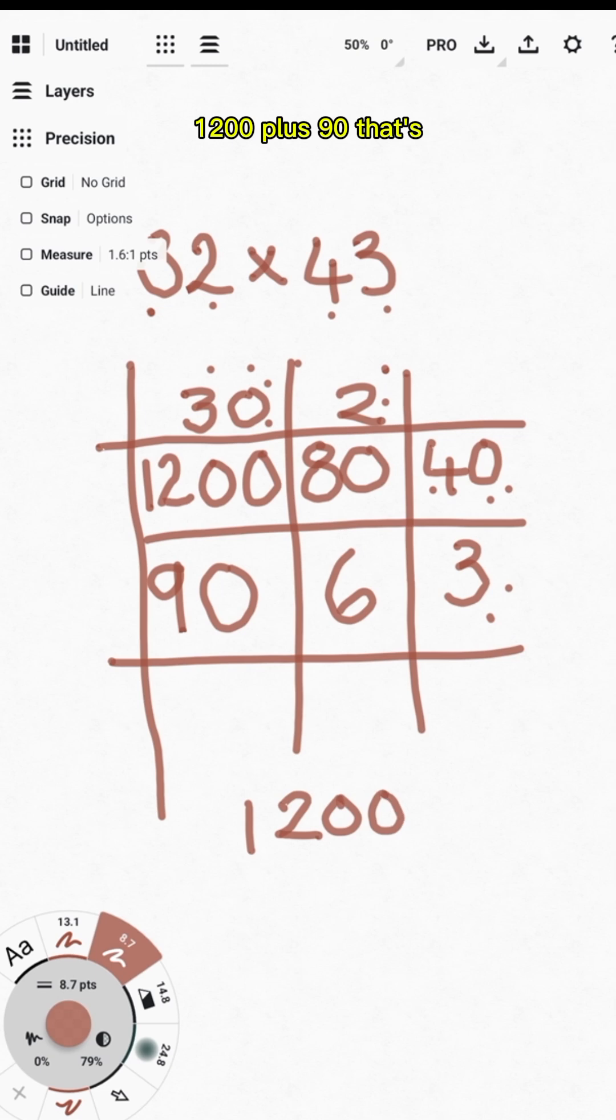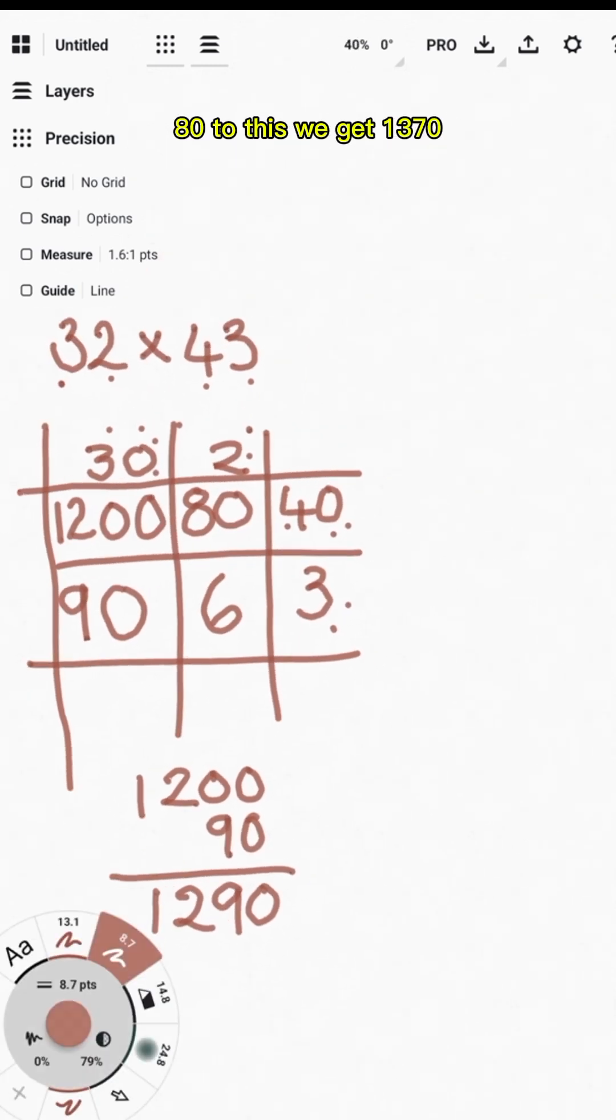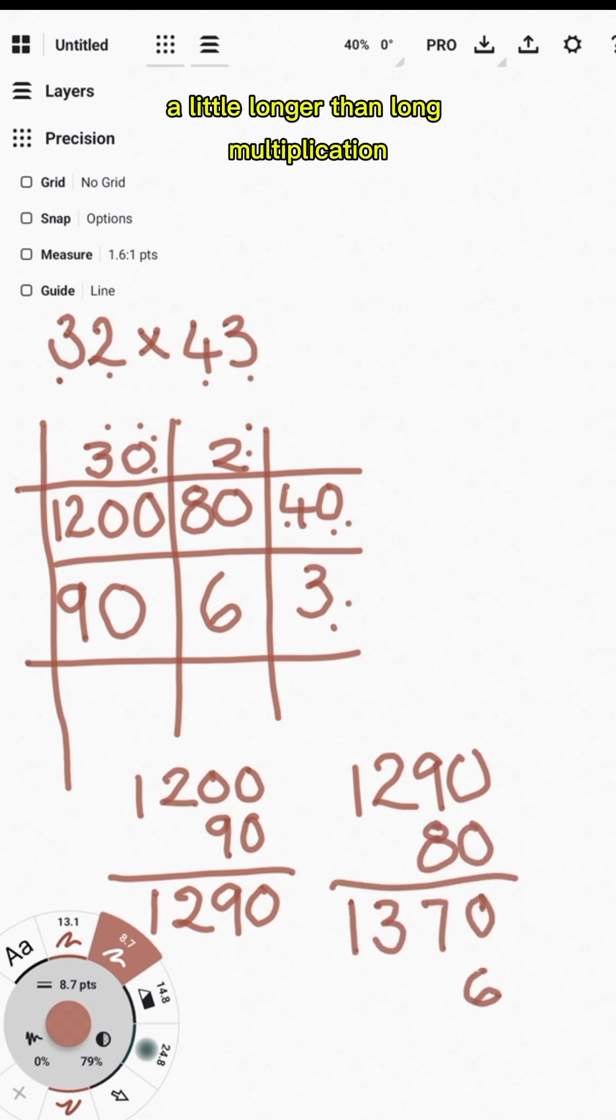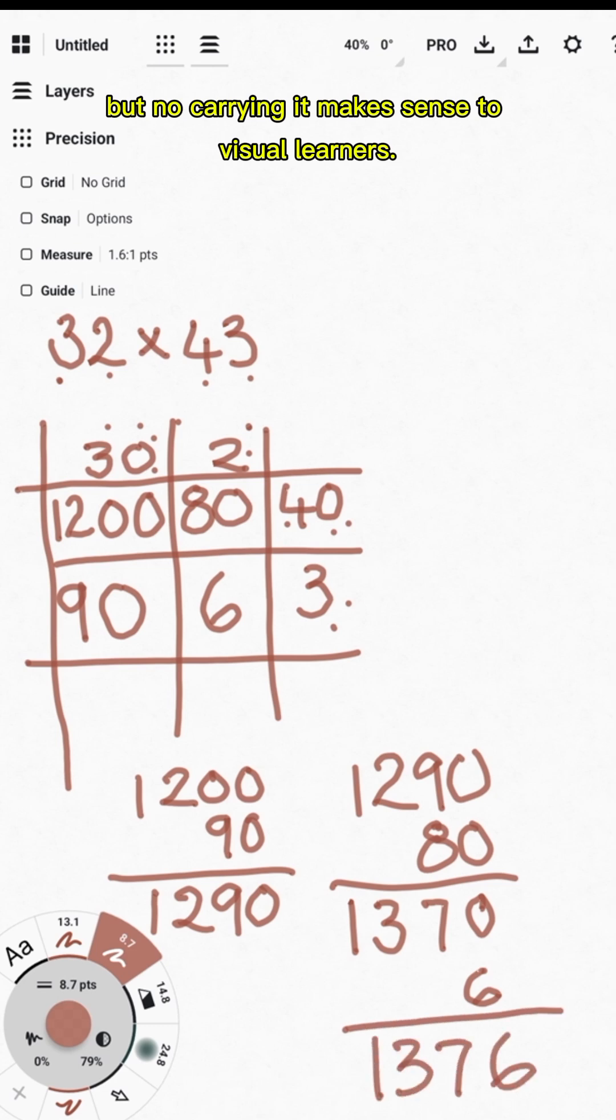Then we just add 1200 plus 90. That's 1290. Add 80 to this we get 1370 plus the 6 and it's 1376. It's a little longer than long multiplication but no carrying it makes sense to visual learners.